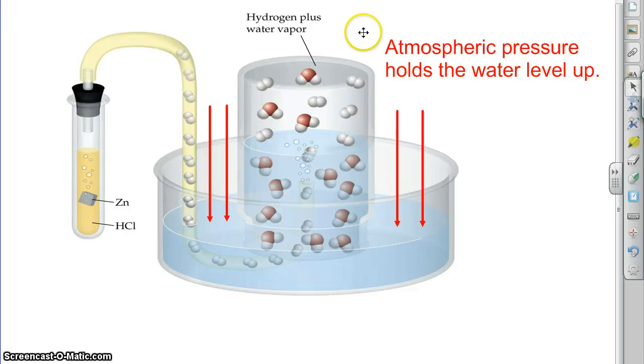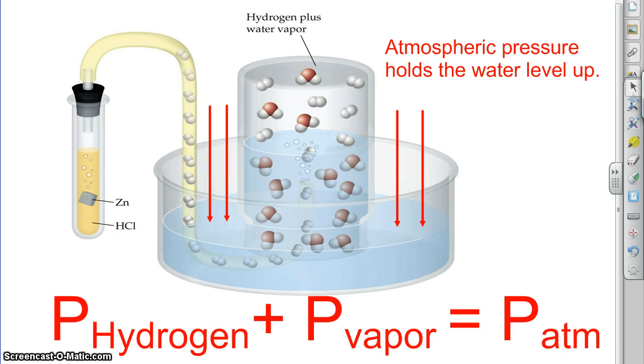And so we need to account for this. We want to figure out what the hydrogen pressure is because that's our sample. But we've got this water also happening. But one thing we do know is that the mixture here will push down equal to atmospheric pressure. So this turns out to be a Dalton's Law problem.